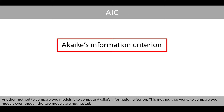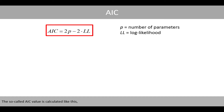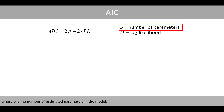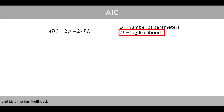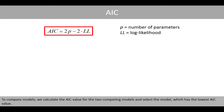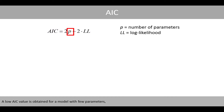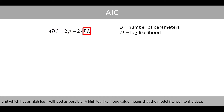Another method to compare two models is to compute the Akaike information criterion (AIC). This method also works to compare two models even though the two models are not nested. The AIC value is calculated as 2p minus 2 times the log likelihood, where p is the number of estimated parameters in a model. To compare models, we calculate the AIC value for the two competing models and select the model which has the lowest AIC value. A low AIC value is obtained for a model with few parameters and as high a log likelihood as possible.